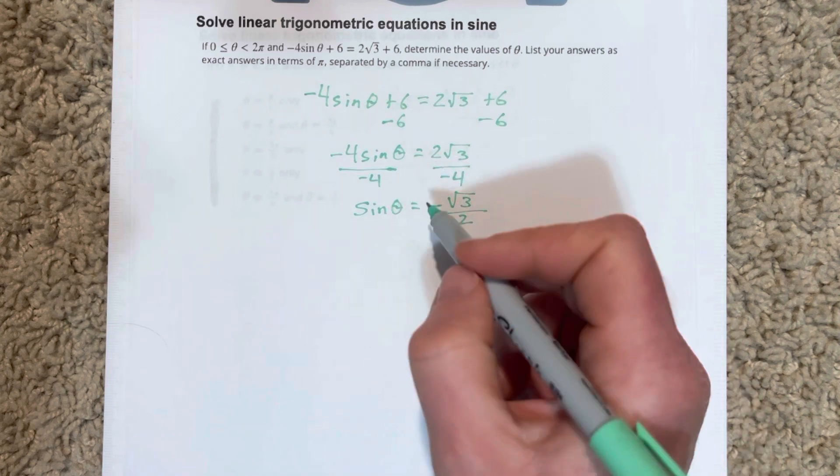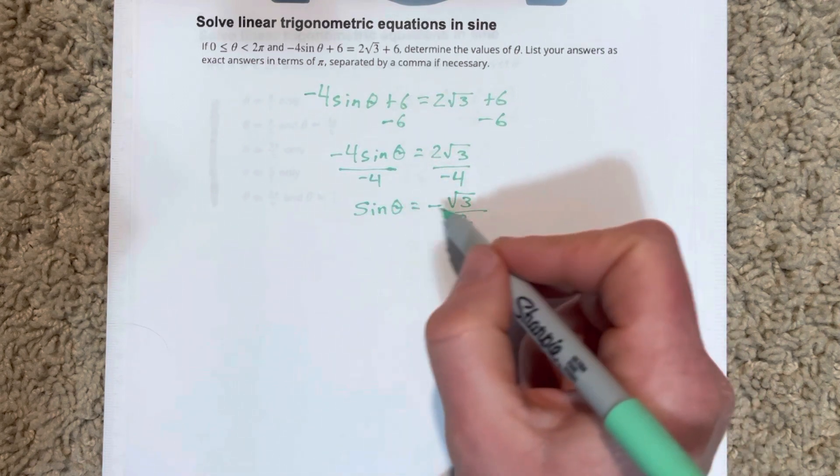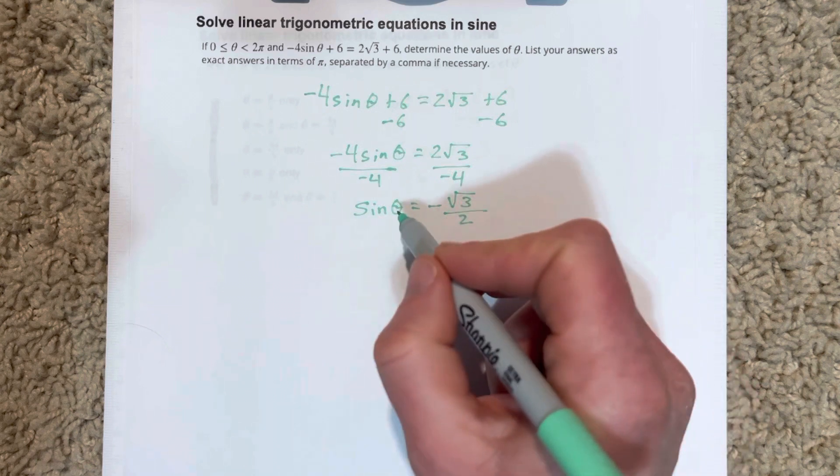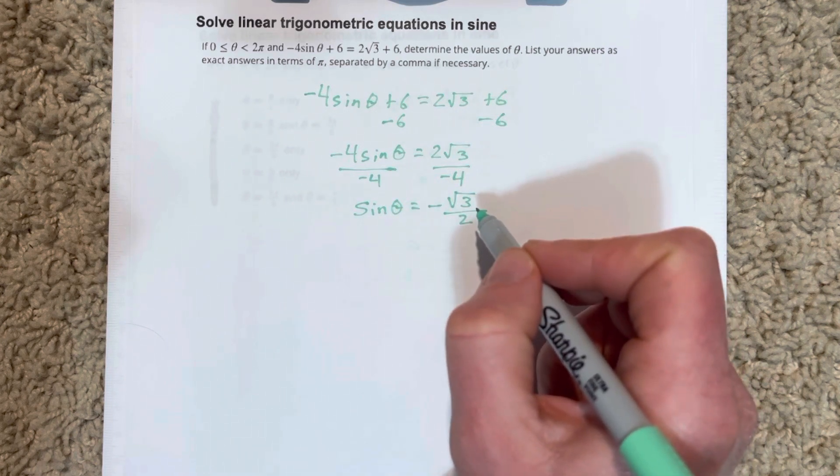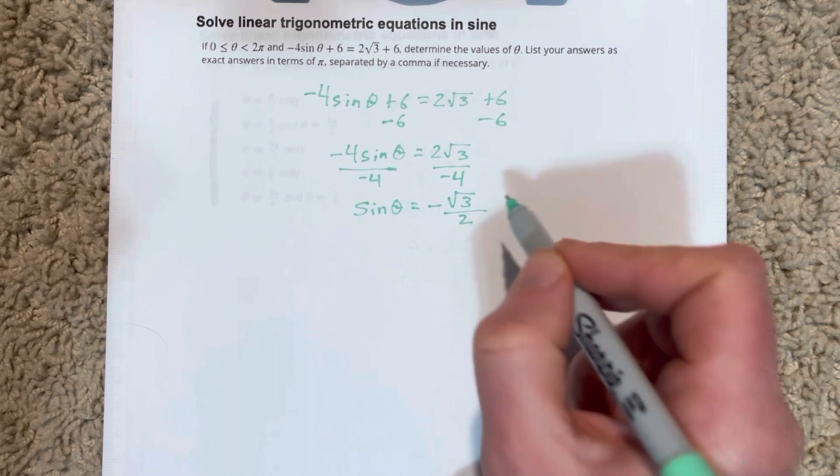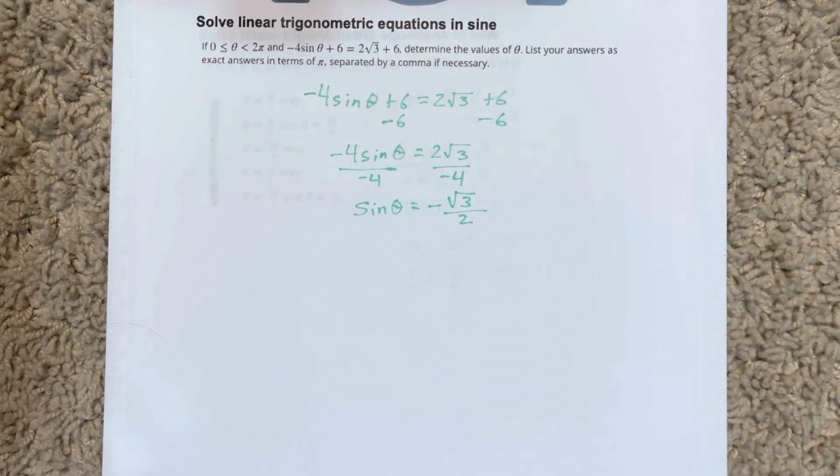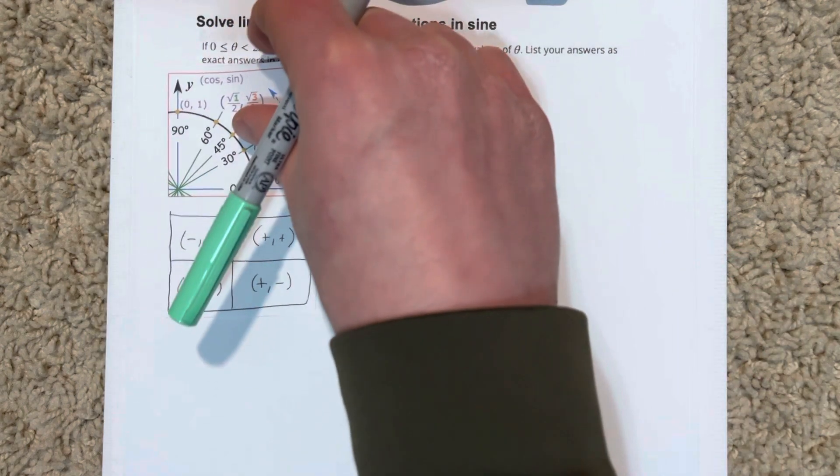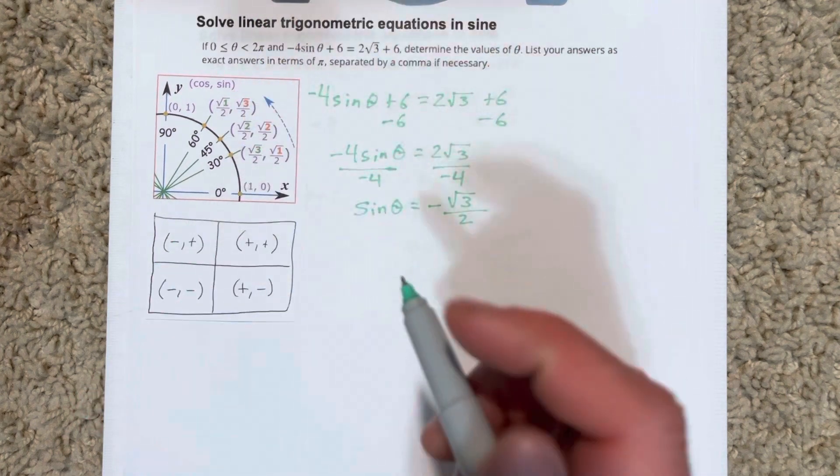So then your question here is, typically you take sine inverse on each side, but I like to just look at it right here and say, what would θ have to be to give me a side length of -√3/2? So I pull out the unit circle.